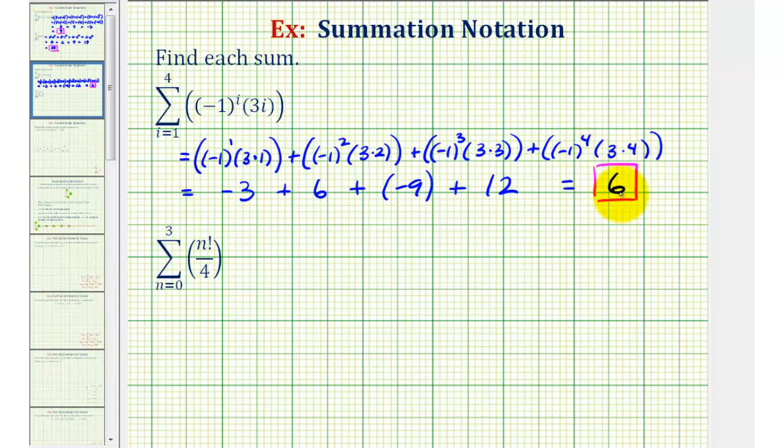Let's take a look at our second example. Notice how now the index is n, and the values of n start at zero, increase by one, until we reach the value of three. So when n is equal to zero, the first term would be zero factorial, divided by four.